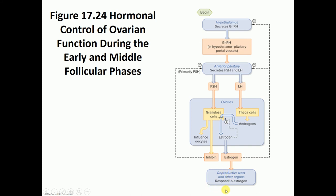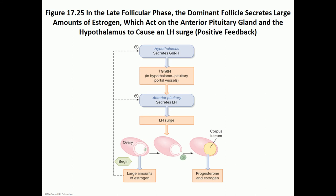Estrogen produces the female sexual characteristics and changes in the endometrium, and by negative feedback inhibits the anterior pituitary and hypothalamus from secreting their hormones. The high levels of estrogen that occur right before ovulation lead to the LH surge. It is thought that low levels of estrogen lead to negative feedback, while high levels lead to positive feedback — stimulating the anterior pituitary and hypothalamus to make their hormones — and it is that LH surge that leads to ovulation. The corpus luteum then produces mainly progesterone and some estrogen.